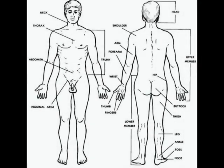The anatomical position is an artificial posture of the human body used as a standard reference throughout the medical profession. We always speak of parts of the body as if the body were in the anatomical position, regardless of what position the body is actually in. In the anatomical position, the body stands erect with heels together, upper members along the sides with palms of the hands facing forward, and the head facing forward. The heart is always considered to be located above the diaphragm, whether the person is sitting at a table or hanging upside down.